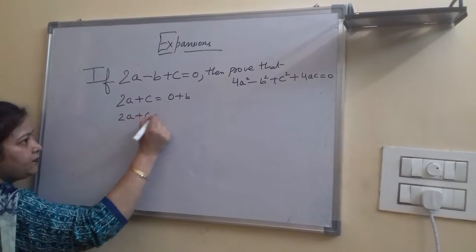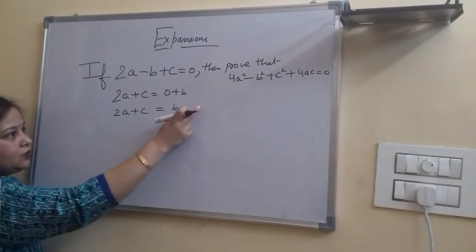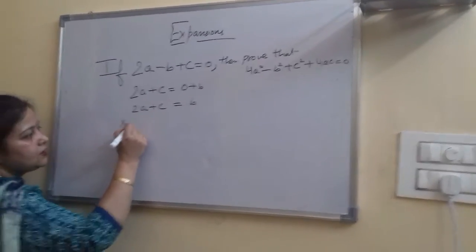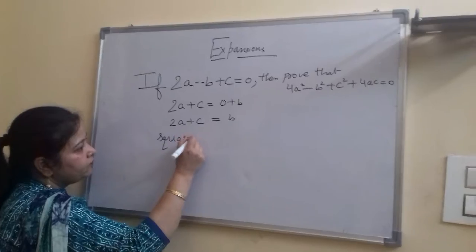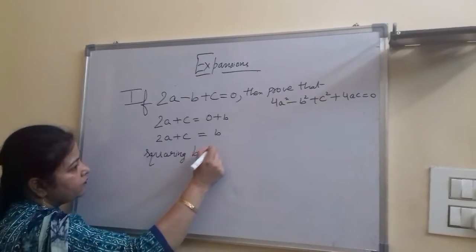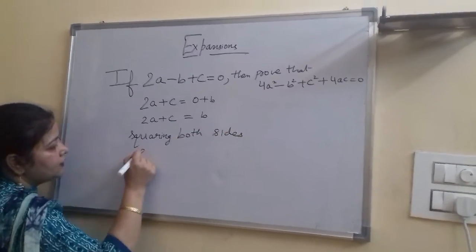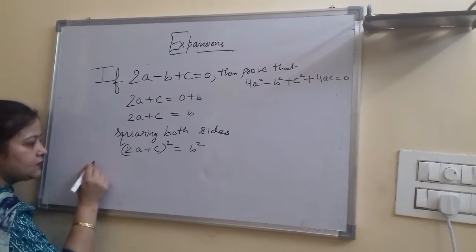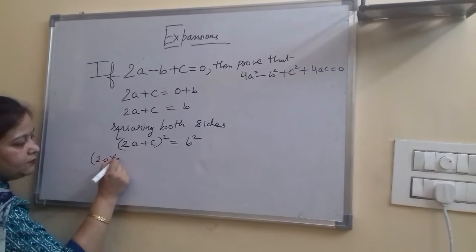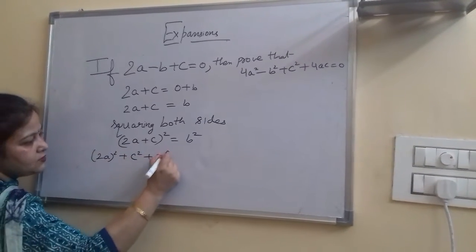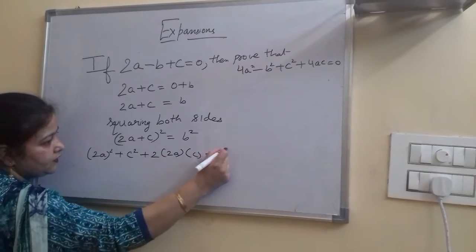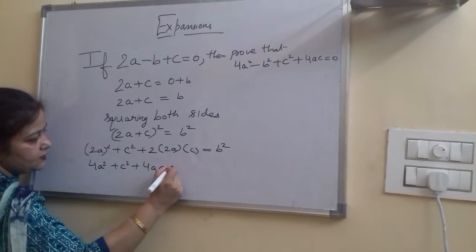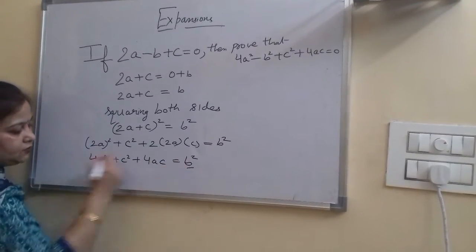It becomes 2a plus c equal to b. Since we require squares, we will square both sides. That gives 2a plus c whole square equal to b square. Expanding: 4a square plus c square plus 4ac equals b square.